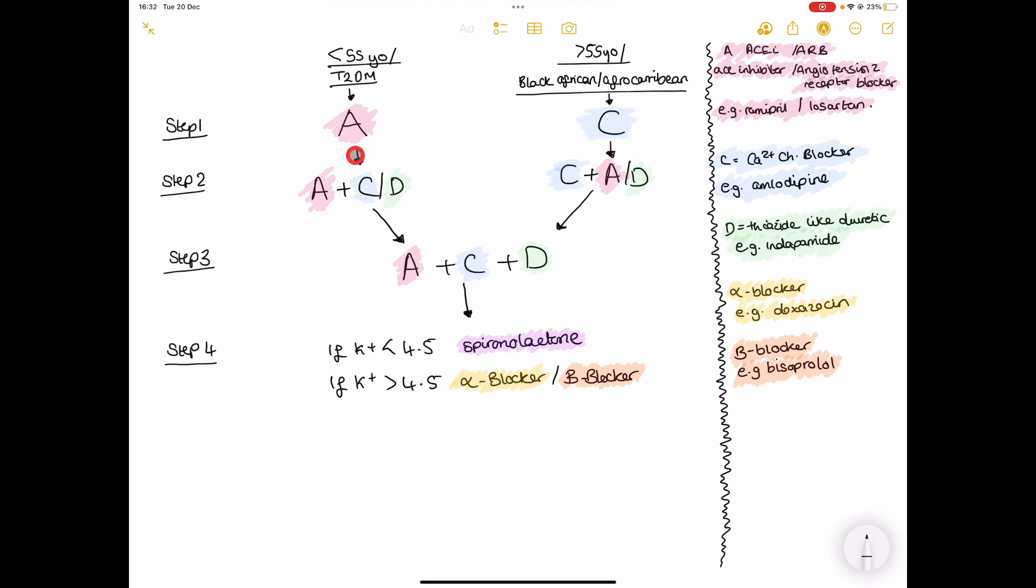So every step in this stepwise approach, you want to make sure that the patient is either fully tolerating the medication, or you have maxed out the dose - the highest dose that medication can get to. And if the blood pressure is still not controlled, then you move on to the next step.